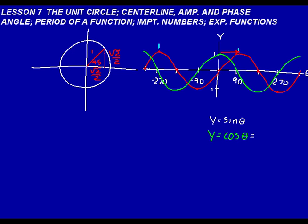We could write cosine θ as sine of (θ + 90°). Cosine θ is the same thing as the sine function shifted to the left 90 degrees. That's called a phase shift, and we always consider the phase shift as that place where it's going up through the x-axis or theta-axis. If we shifted to the left 90, we say θ plus 90, because sine of (−90 + 90) would be sine of 0, which is 0. Cosine of minus 90 is also 0. So we've talked about the two fundamental sinusoid patterns: y equals sine θ and y equals cosine θ.